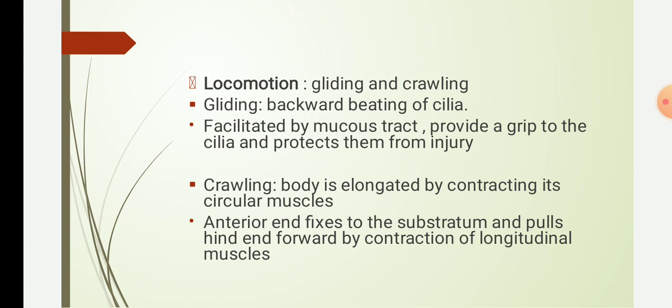In crawling, the muscle cells are involved. Crawling is brought about by contraction of the circular muscles. The anterior end is fixed to the substratum by a chord of mucus, and the hind end is pulled forward by contracting the longitudinal muscles. Then the longitudinal muscles contract, causing the right and left sides to act alternately, so the anterior end also contracts alternatively and the worm moves forward.